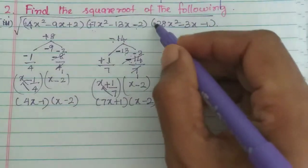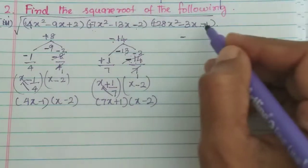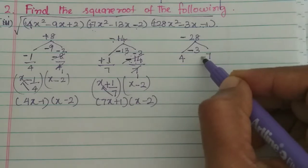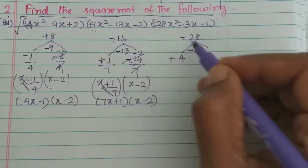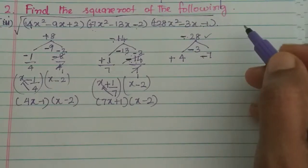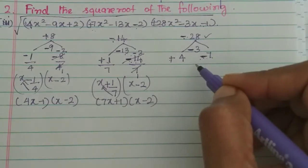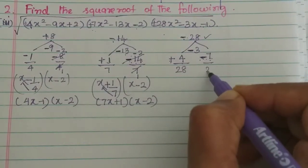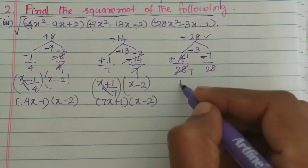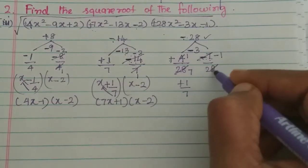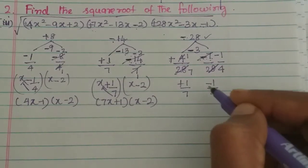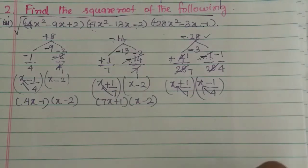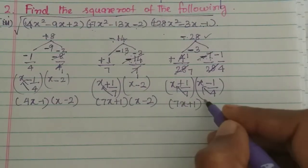For the third expression, 28 times 1 is 28, and the middle term is minus 3. We need minus 7 and plus 4: minus 7 plus 4 gives minus 3, and the condition is satisfied. Dividing by coefficient 28: minus 7 by 28 gives minus 1/4 and 4 by 28 gives plus 1/7. Multiplying back gives 7x plus 1 into 4x minus 1.